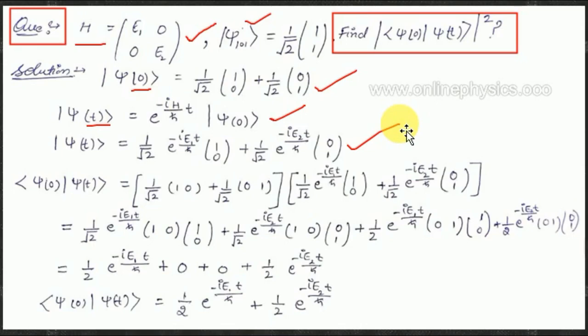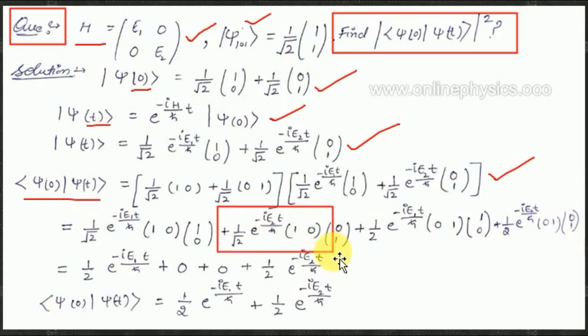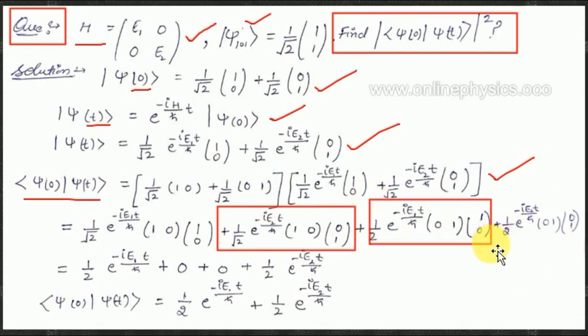Now we have both psi at 0 and psi at t, so we take their inner product. The bra of psi at 0 is (1/√2)(1, 0) + (1/√2)(0, 1) in row form. Taking the product with psi at t, the cross terms vanish, and we are left with (1/2) exp(−ie1t/ℏ) + (1/2) exp(−ie2t/ℏ).